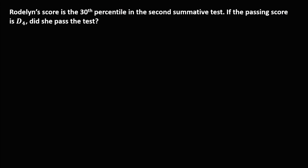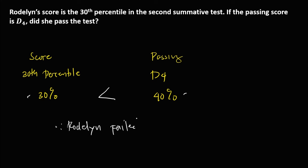For this problem, Rodeline's score is in the 30th percentile in the second summative test. If the passing score is in the 4th decile, did she pass the test? Since the score of Rodeline is in the 30th percentile, which equals 30%, and the passing score is in the 4th decile, which equals 40%, since the score of Rodeline is less than the passing score, therefore, Rodeline failed the test.